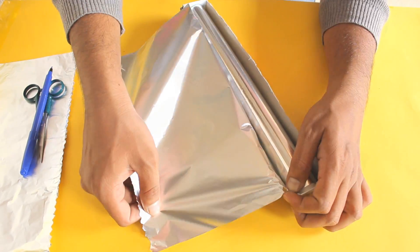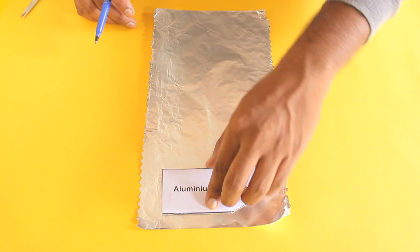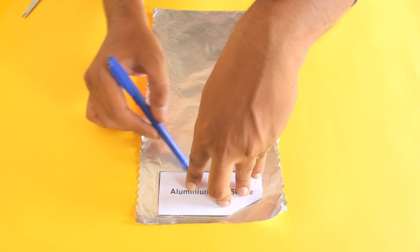Now let's take the aluminum foil out of the box and place the foil shape template over it and mark the shape, fold it and cut accordingly.